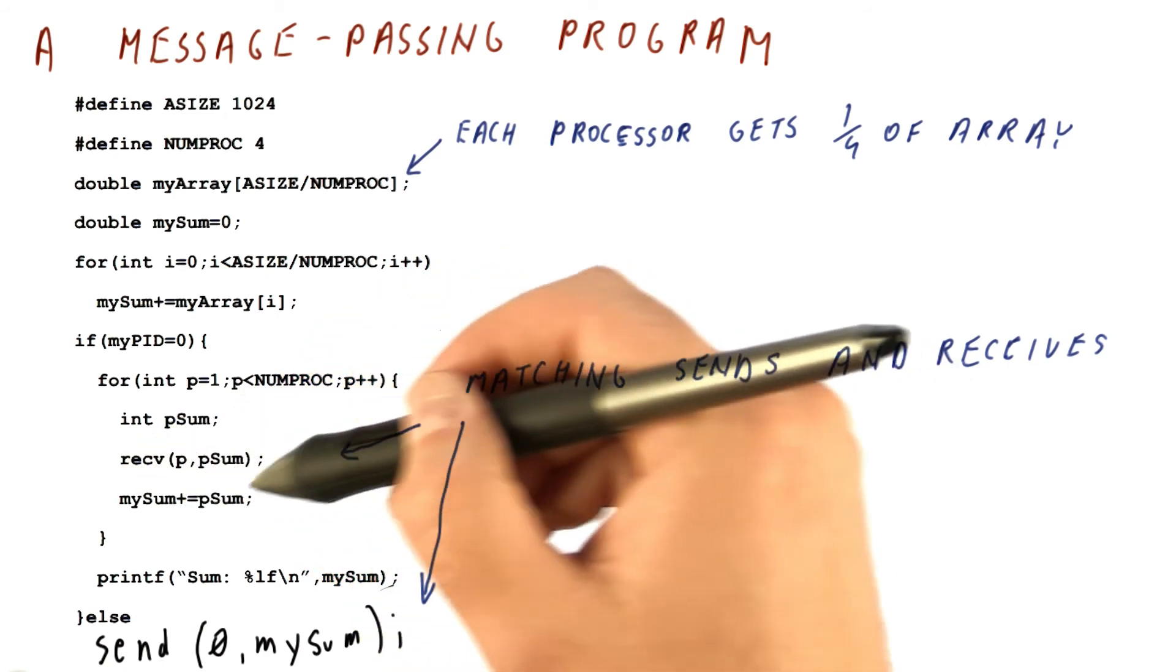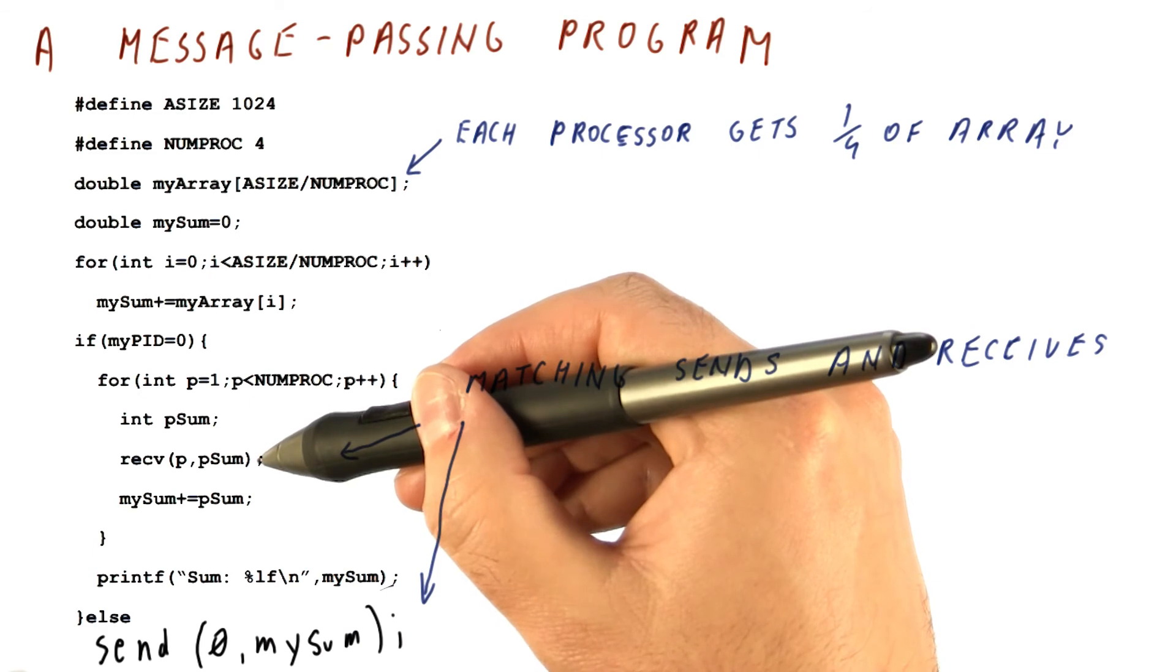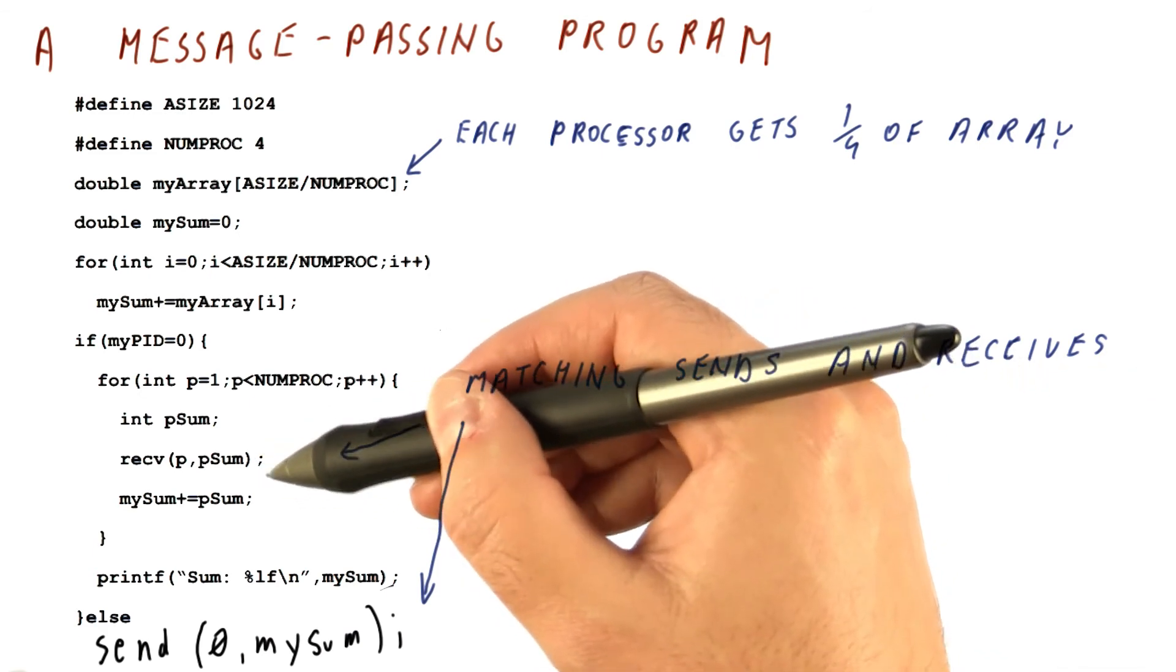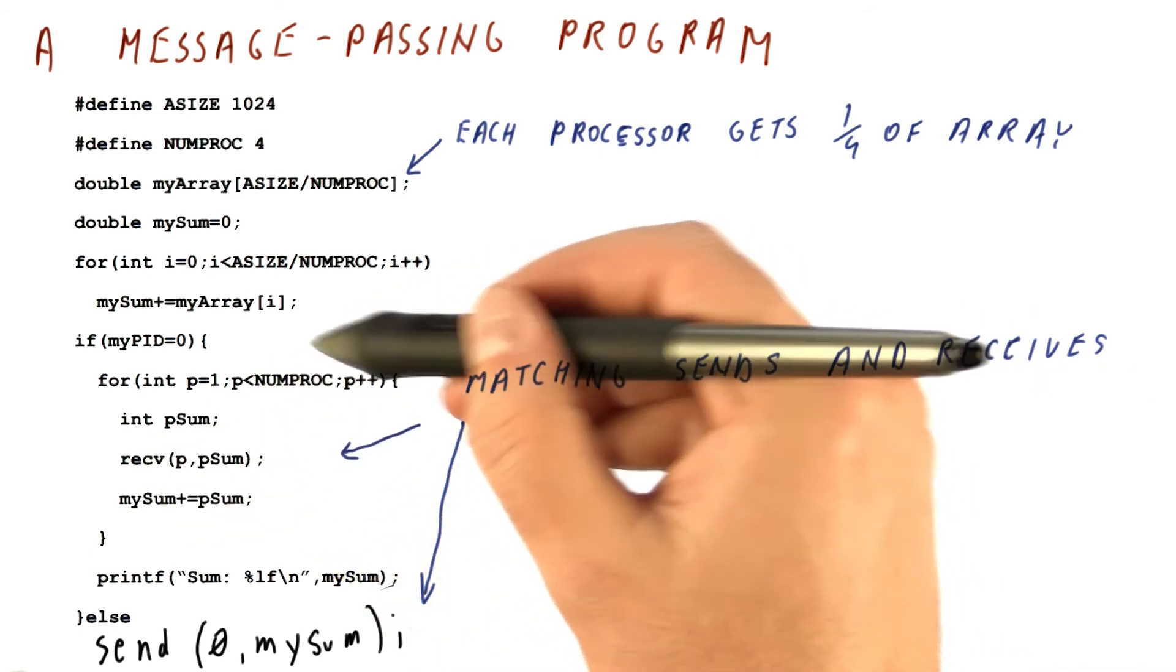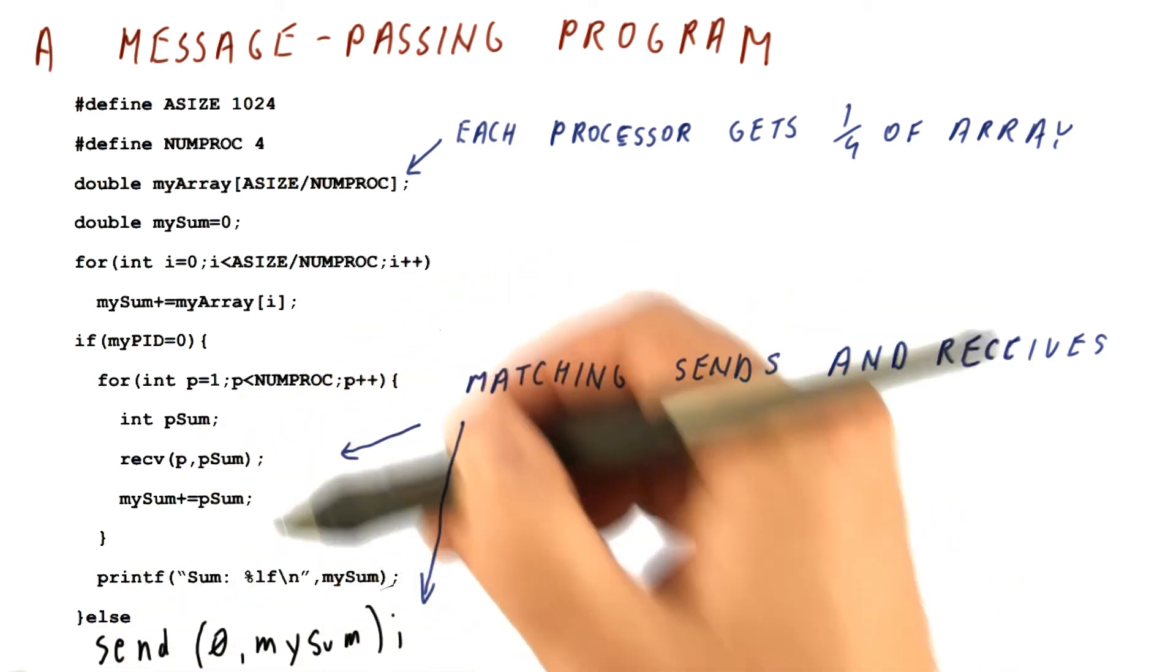And also if we wait to receive something and there is no send for it, it's going to be a problem, we get stuck here. So we need to know how many processes to wait for. We need to send exactly what's expected at the time and so on.